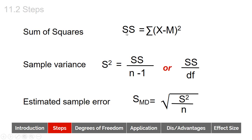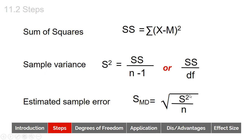To find our standard error, we follow three steps, which will look very familiar to the one-sample t-test. First, we find the sum of squares by taking each of the difference scores, subtracting the mean of the difference scores, squaring each of those values, and summing them up. Second, the sample variance equals the sum of squares divided by n minus 1 — we use n minus 1 because we're estimating population variance and our sample variance is automatically less than the population variance. Third, we take the square root of our variance divided by n to find the standard error.